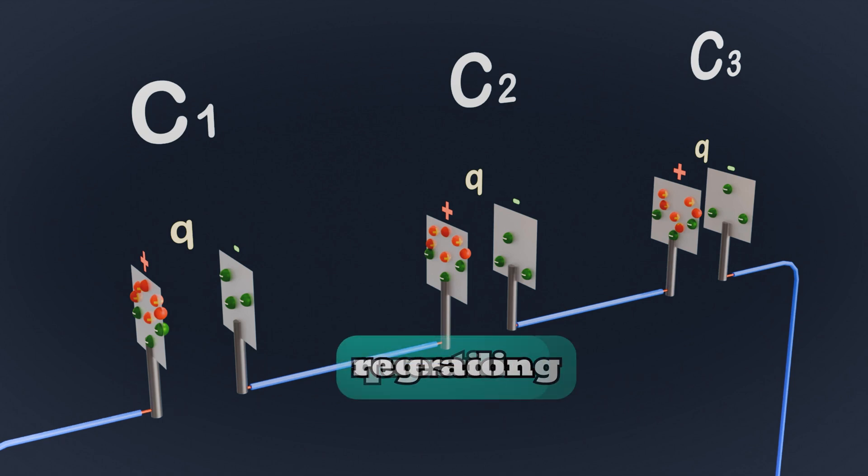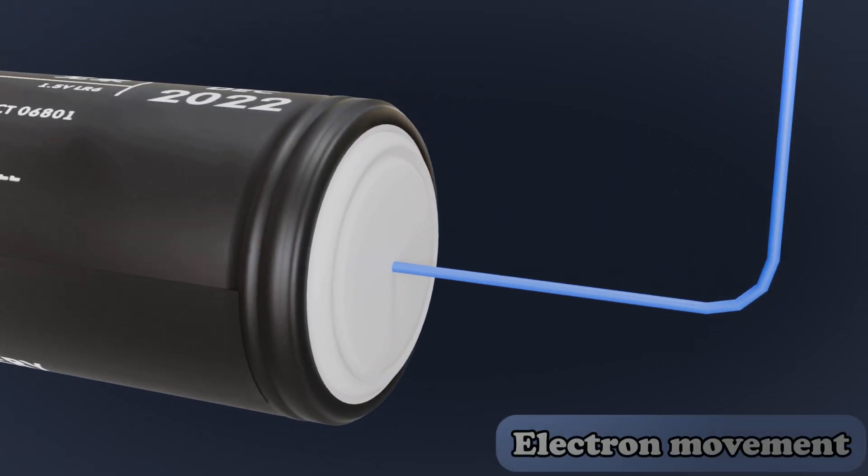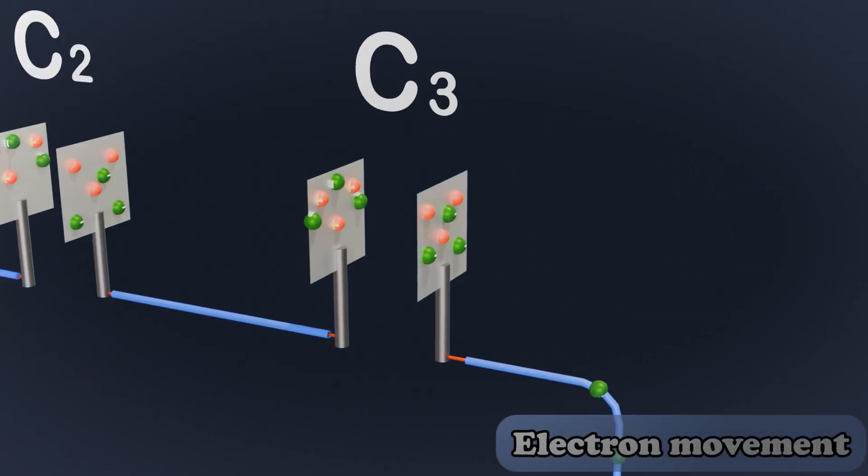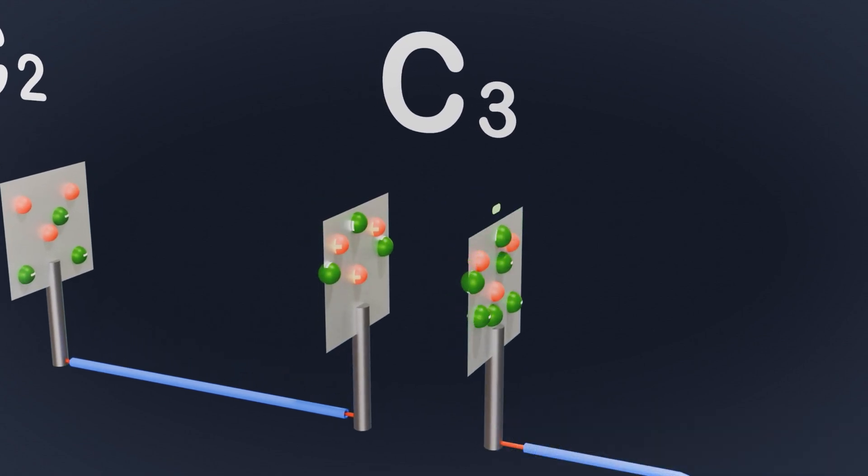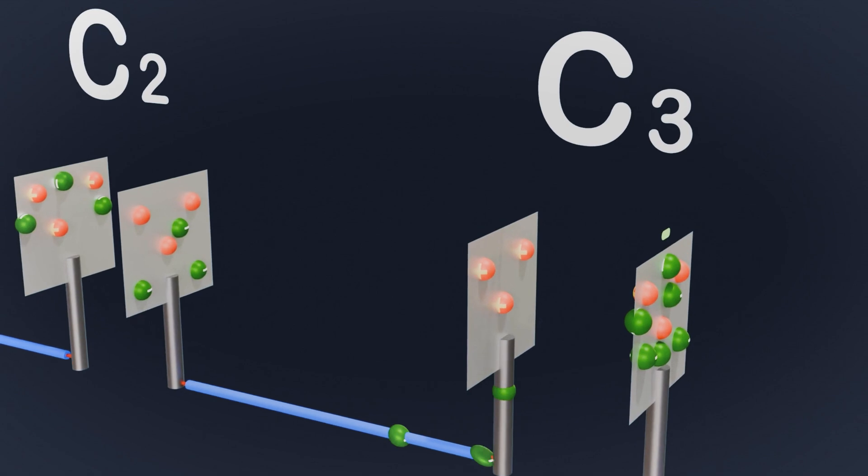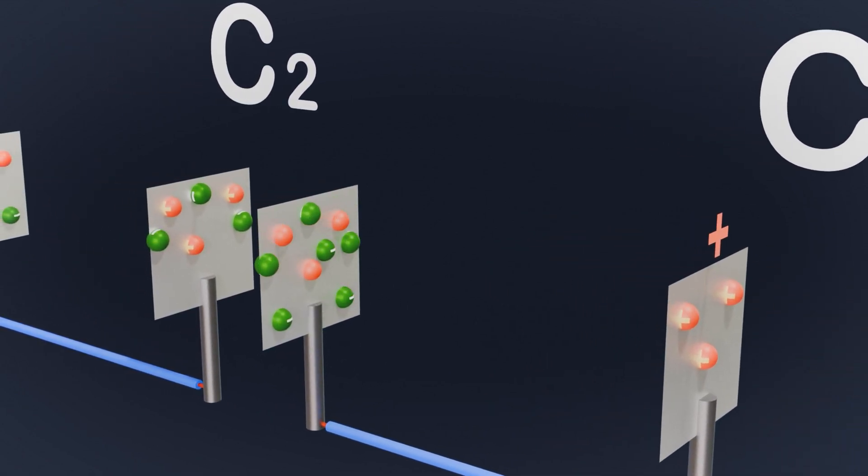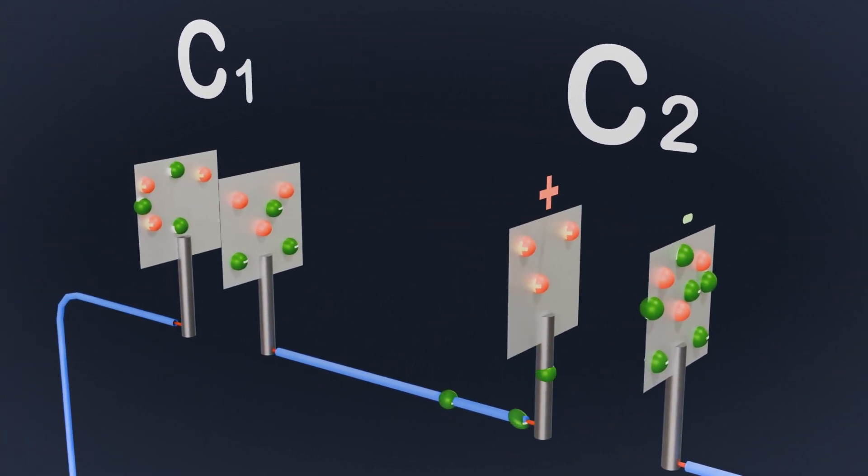I got a lot of questions regarding that positive charge does not move. So here is the explanation from the perspective of electrons, not from the conventional current perspective, but from the movement of electrons, which are the real charge carriers. The battery's negative terminal pushes electrons onto the nearest plate of C3, making it negatively charged. These extra electrons repel electrons from the opposite plate of C3, leaving it positively charged. The repelled electrons move to C2's plate, making it negative, and push electrons away from its other plate, making that positive.